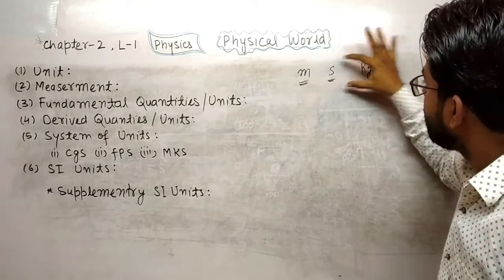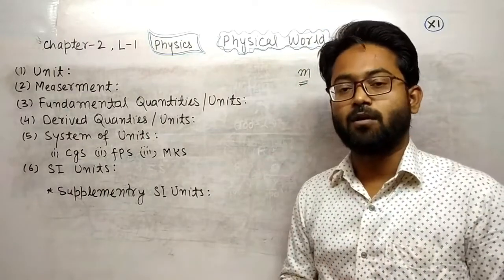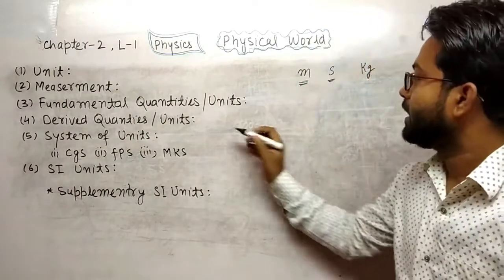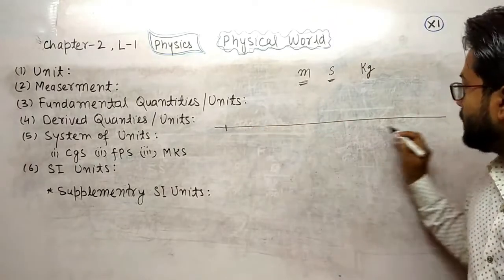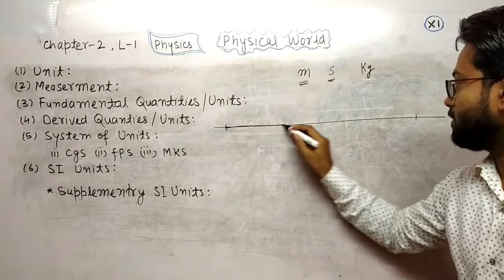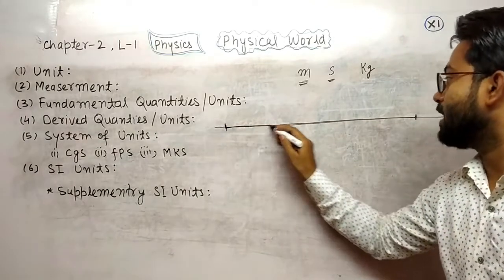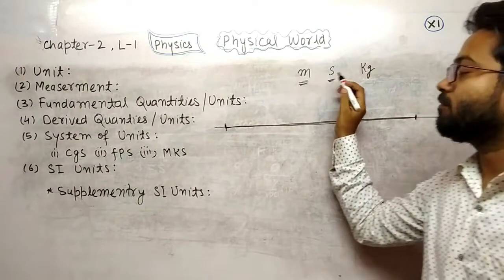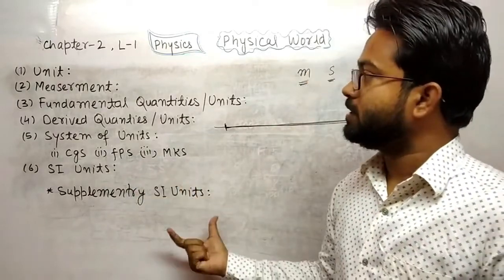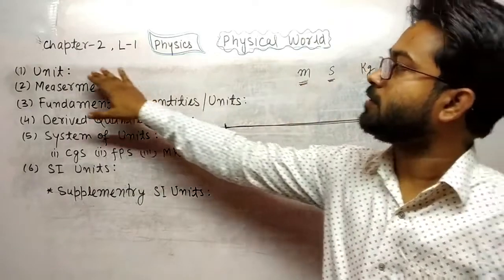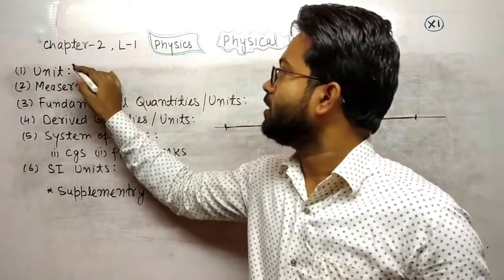Fixed amount of any quantity, or a standard amount of any quantity — any fixed amount of any quantity that is taken by the system of units is called a unit. Fixed amount of any quantity is called unit.